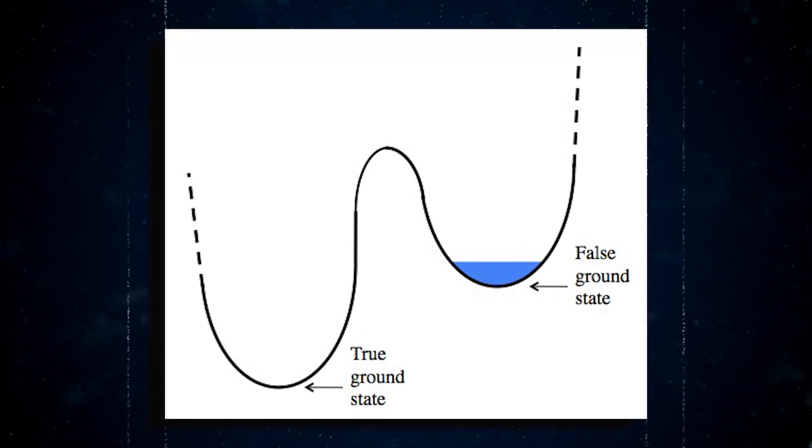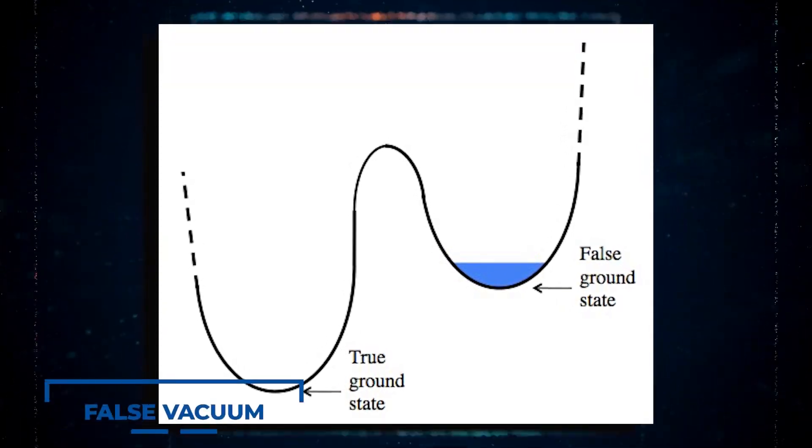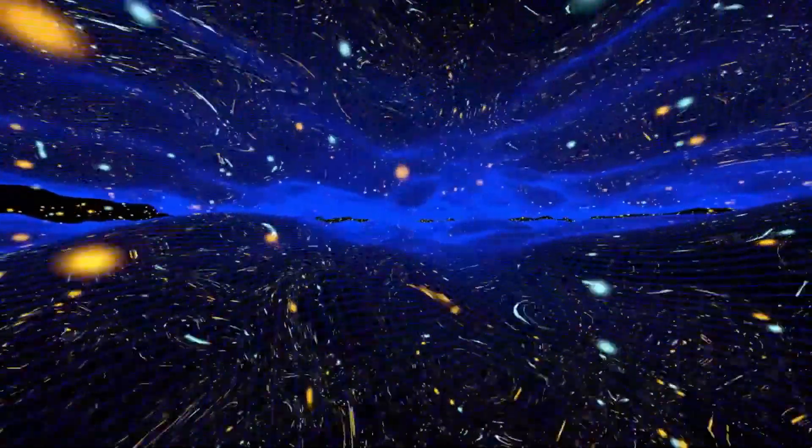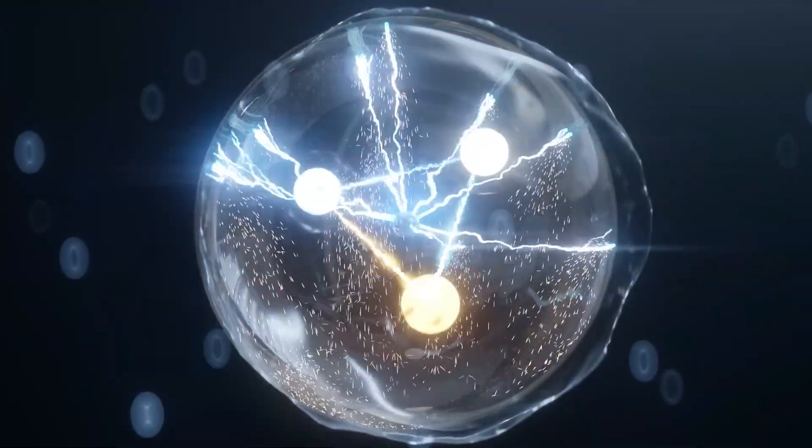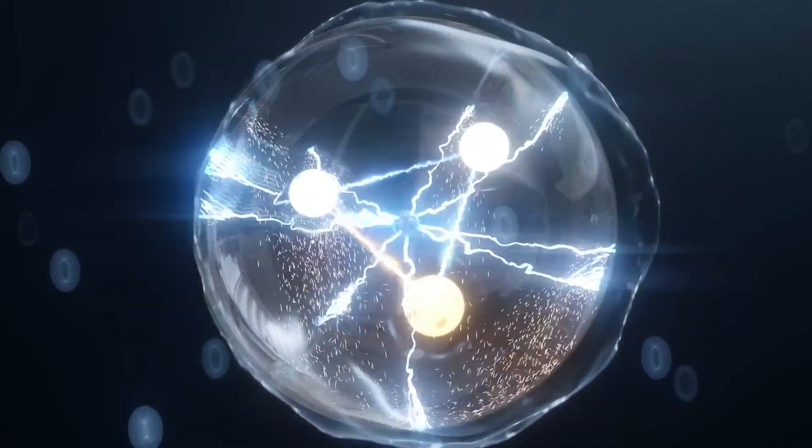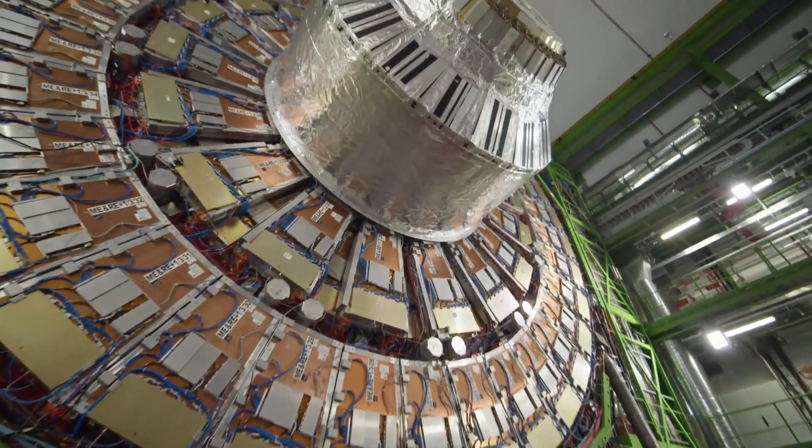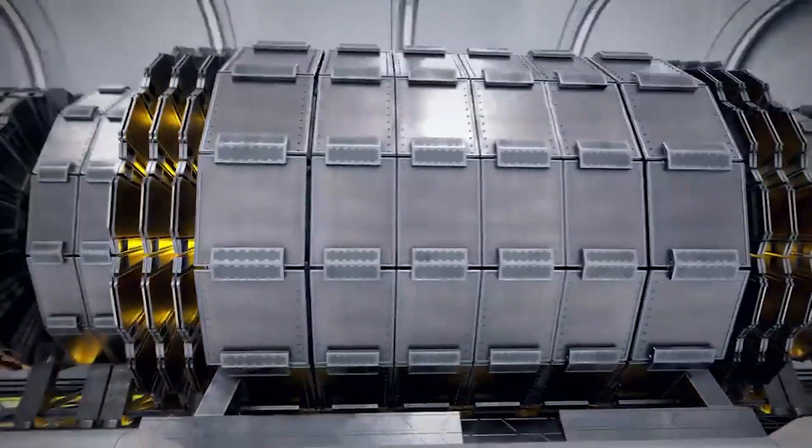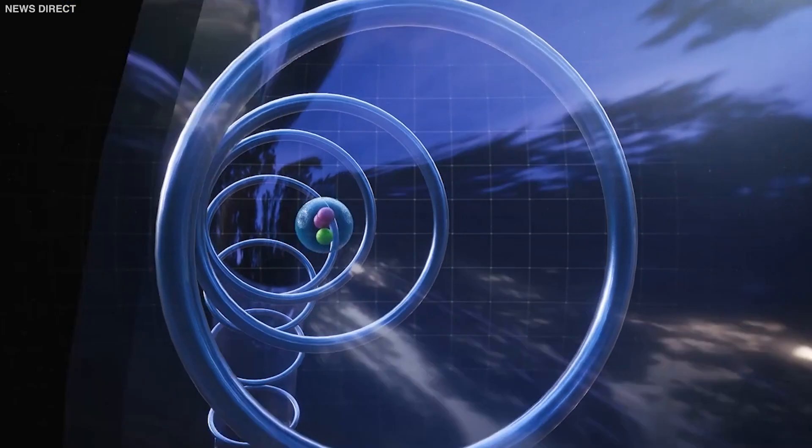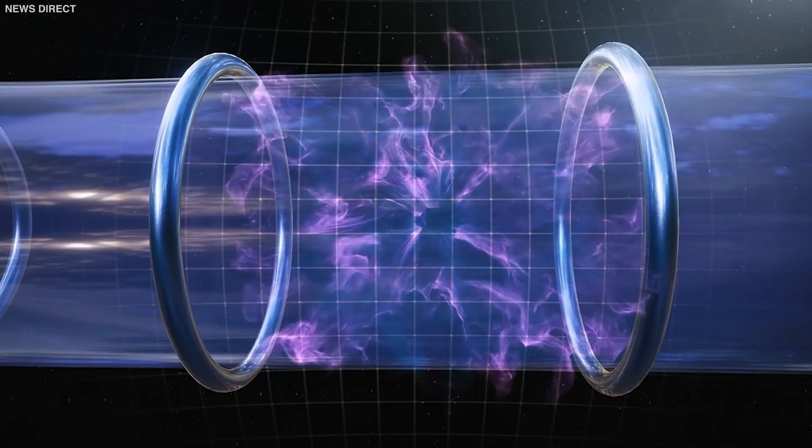This apocalyptic theory revolves around the concept of a false vacuum, a hypothetical state of space where the energy is not at its lowest level. According to this theory, if the LHC were to create a false vacuum, it could trigger a chain of catastrophic events that would ultimately lead to the destruction of everything we hold dear. While this doomsday scenario may sound far-fetched, it is a genuine concern for some experts.